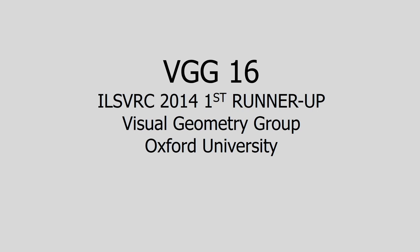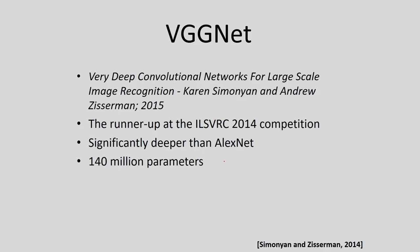VGGNet stands for Visual Geometry Group from Oxford University. VGG16 was developed in 2015 and was the runner-up in the ILSVRC 2014 competition. It is significantly deeper than AlexNet and has altogether 140 million parameters.